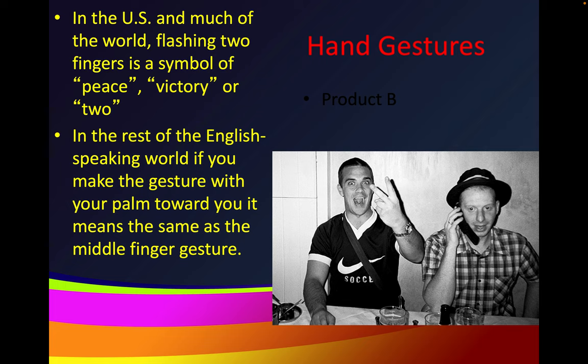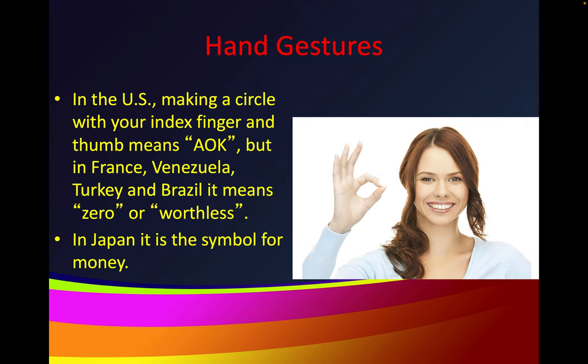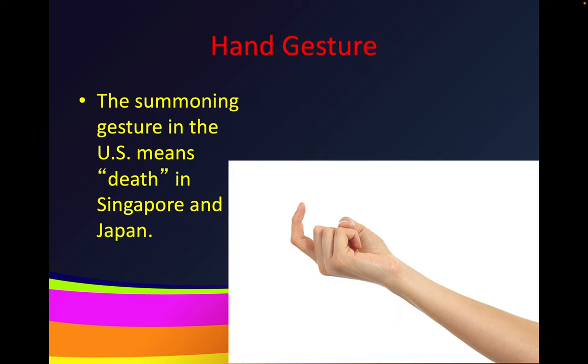In the United States and much of the world, flashing two fingers is a symbol of peace, victory, or two. In the rest of the English-speaking world, making the gesture with your palm toward you means the same as the middle finger. Thumbs up has positive connotations in much of the world, but in the Middle East, Italy, and Greece it means 'up yours.' In the United States, making a circle with your index finger and thumb means A-OK, but in France, Venezuela, Turkey, and Brazil it means zero or worthless, while in Japan it is a symbol for money. The summoning gesture in the United States means death in Singapore and Japan.